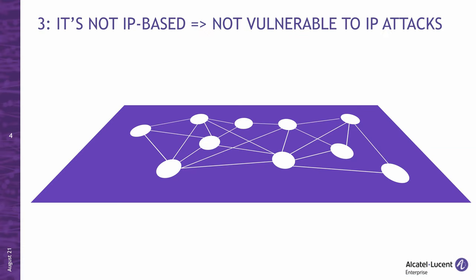Number three: a little-known fact about SPB is that it is not based on IP. It uses ISIS, a routing protocol which does not rely on IP, which means it's not vulnerable to IP-based attacks. SPB core nodes do not have IP addresses and they do not route traffic — they bridge it. Any routing is done at the point of entry, the edge node, and is bridged over the shortest path to the destination.